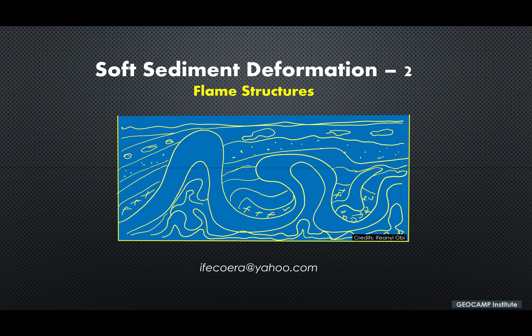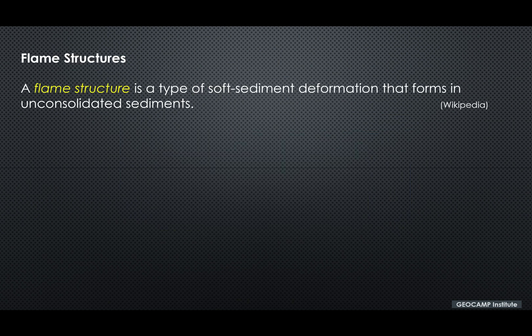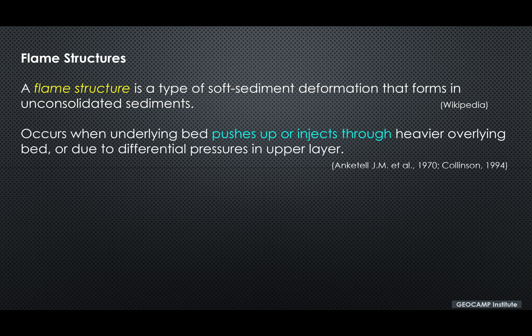Soft Sediment Deformation Part 2. This episode will focus on flame structures. A flame structure is a type of soft sediment deformation that forms in unconsolidated sediments. They occur when the underlying bed pushes up or injects through heavier overlying beds, or due to differential pressures in the upper layer.